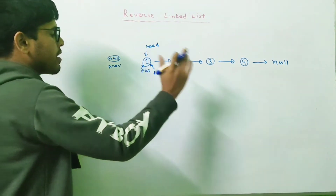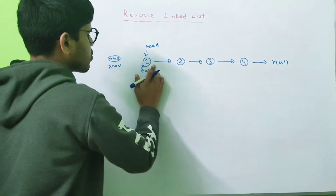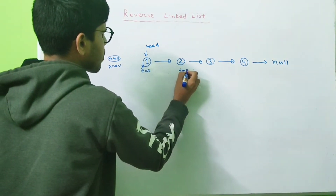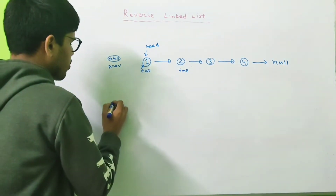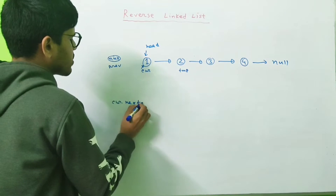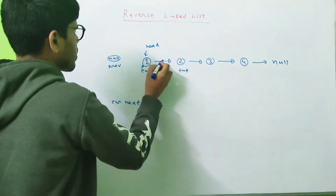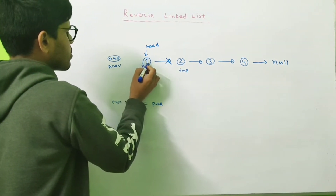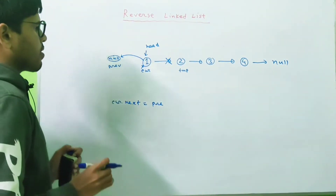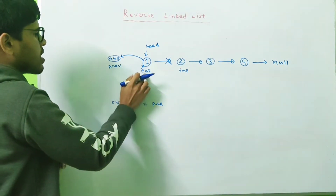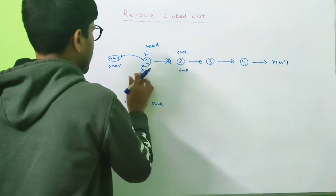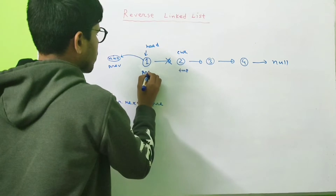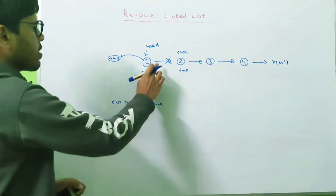We're going to move temp to the next of current, so temp will point to the next node. Now we apply the formula: current.next = prev. This disconnects the existing link and makes node 1 point to prev. Then we move prev to current and current to temp. Now current points to node 2 and prev points to node 1.